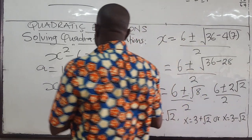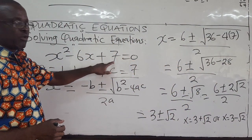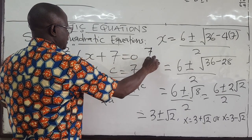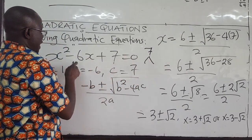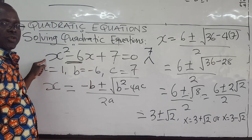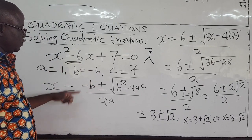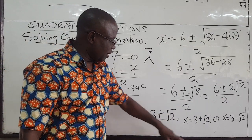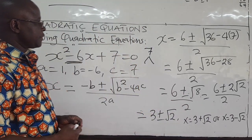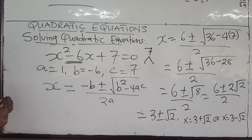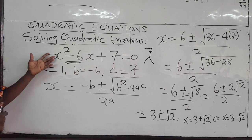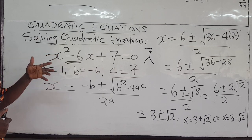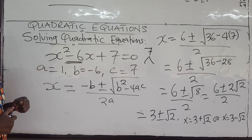Here you notice that this equation cannot be factorized — if you multiply 7 and 1 you get 7, but you can't find factors of 7 that add up to negative 6. So you have to use this formula to find the values of x. You get irrational numbers with √2 appearing. That is how you solve quadratic equations. Next, we look at the nature of the roots of the quadratic equation, and completing the square will come in handy to help with that.